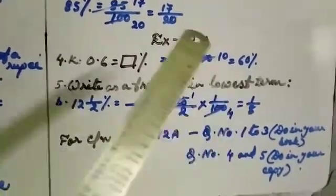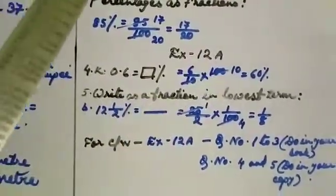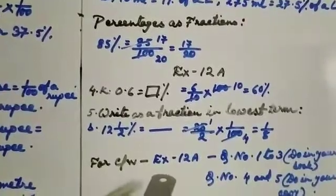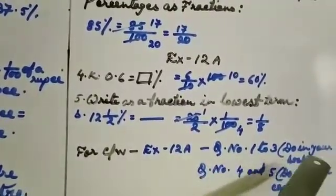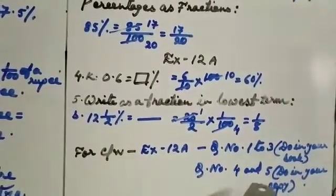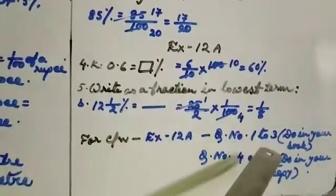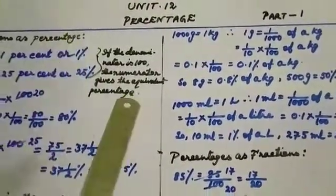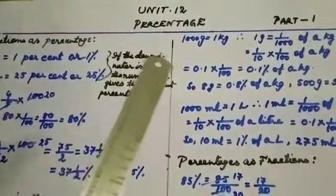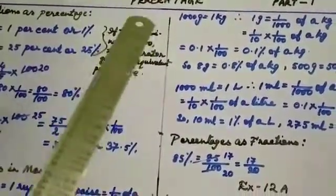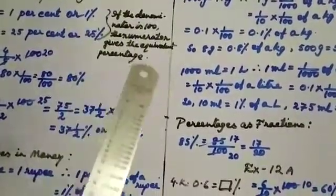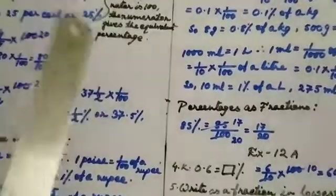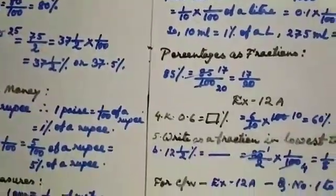After this, do practice all of this. Watch this video class very carefully. For your classwork, do Exercise 12a, questions 1 to 3 in your book and questions 4 and 5 in your copy. For questions 1 to 3, you will see small squares inside a big square — count the 100 squares, and show the colored parts out of 100 as a percentage. So today I am ending my class here. Om Namah Shiva.